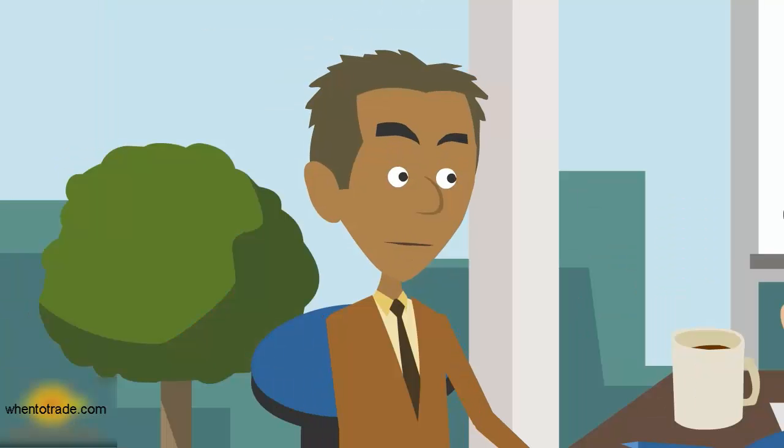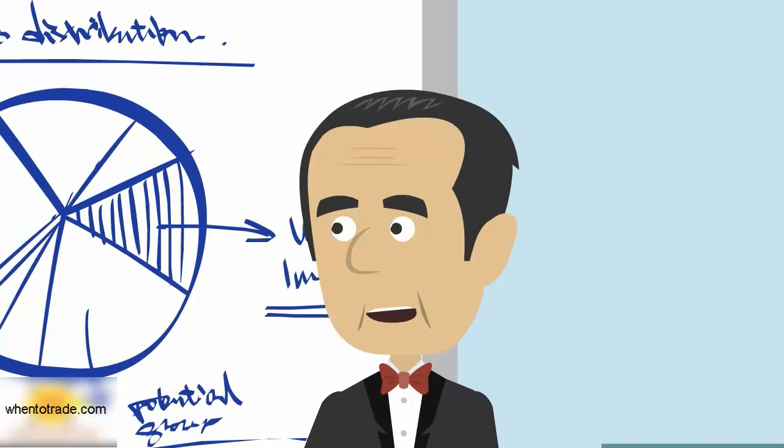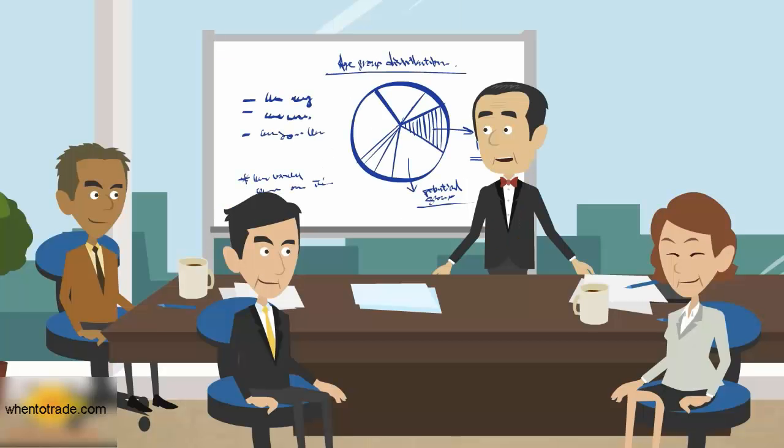What is the benefit of that? Genetic algorithms differ from traditional search and optimization methods in three significant points. First, they search parallel from a population of points. Therefore, it has the ability to avoid being trapped in local optimal solution like traditional methods.